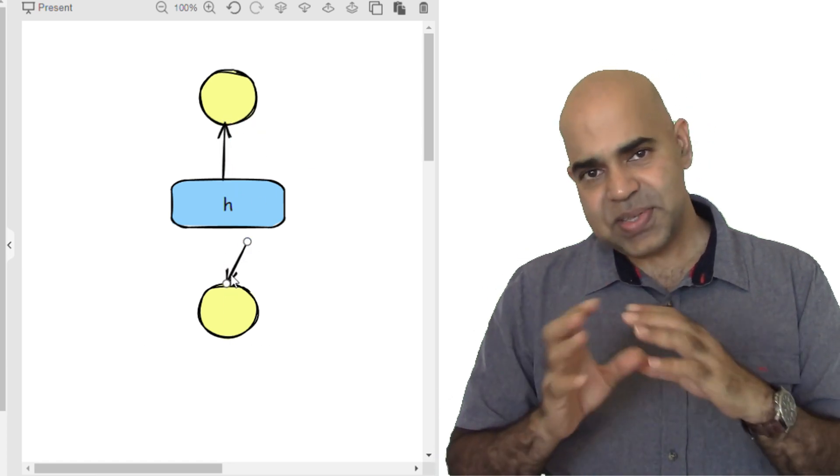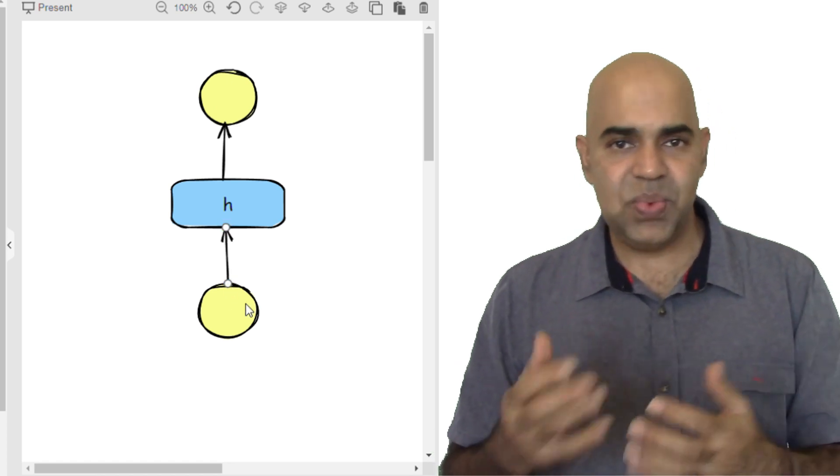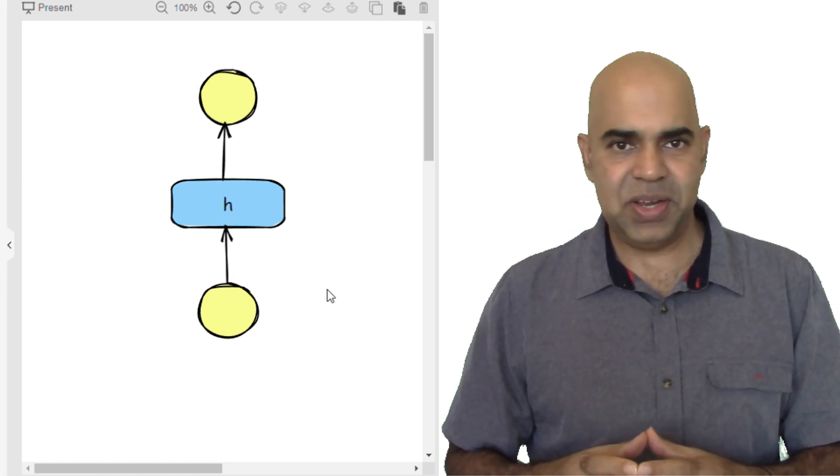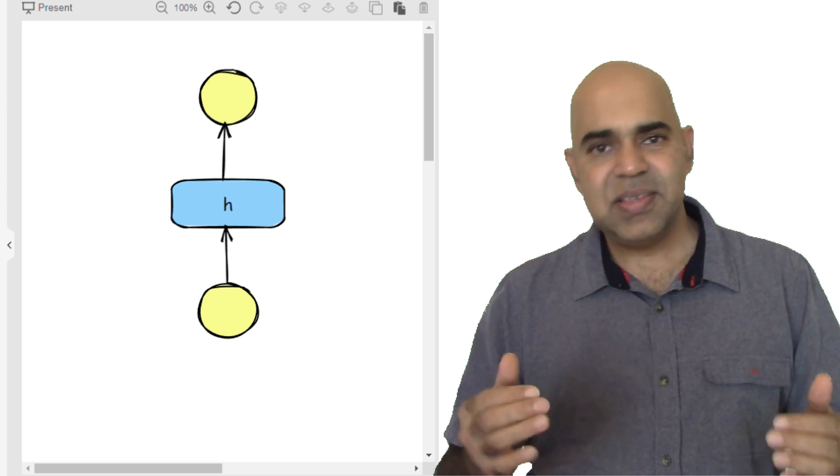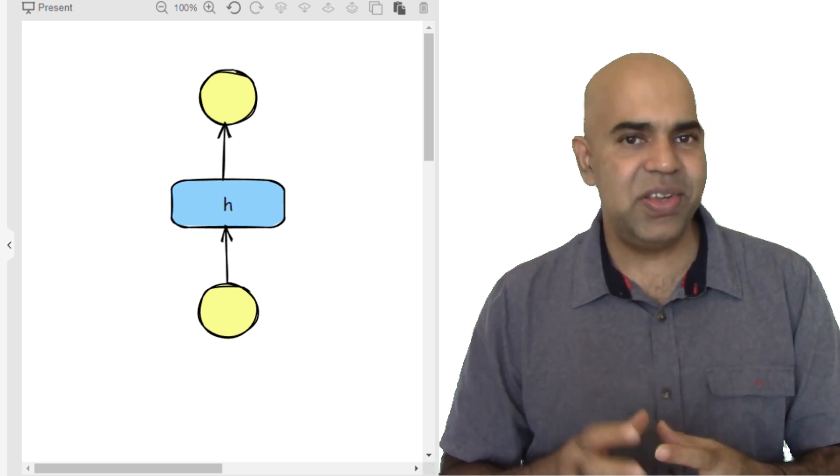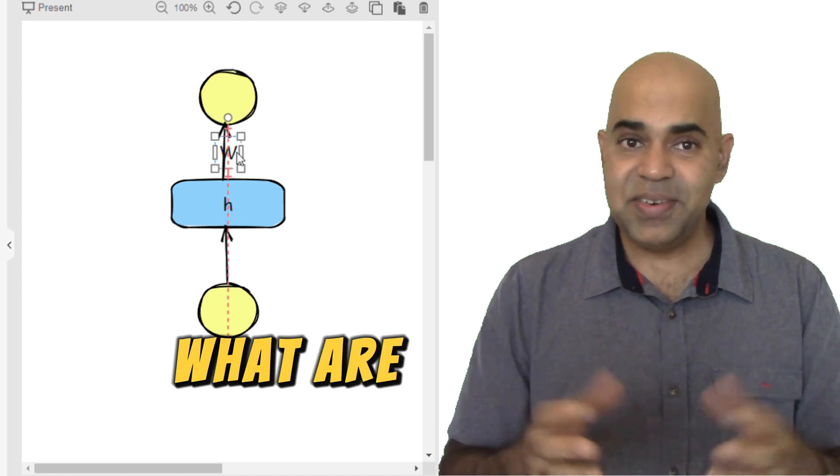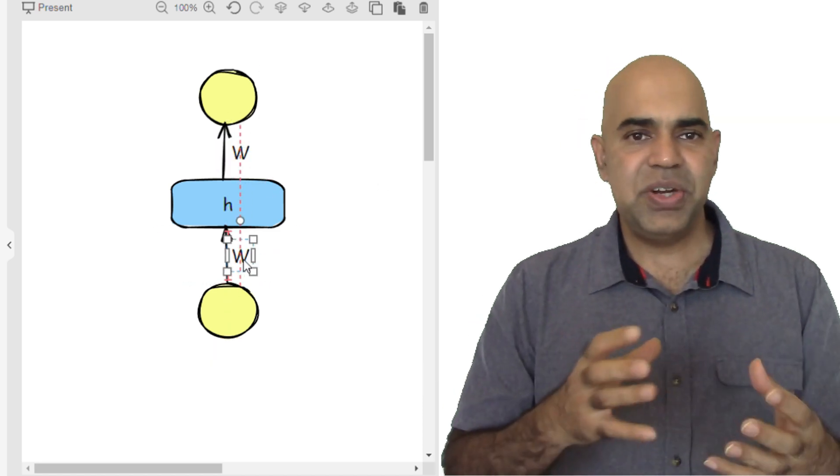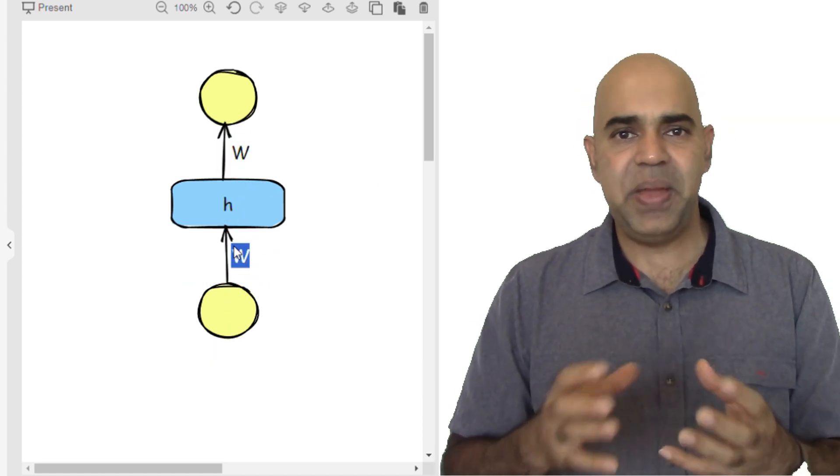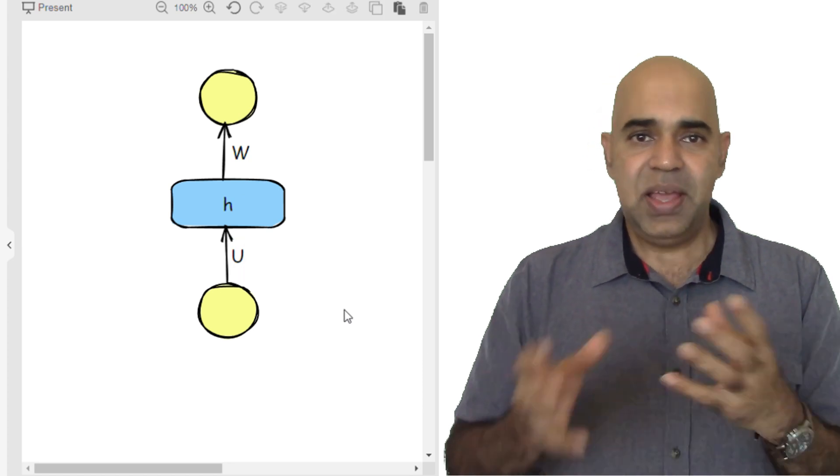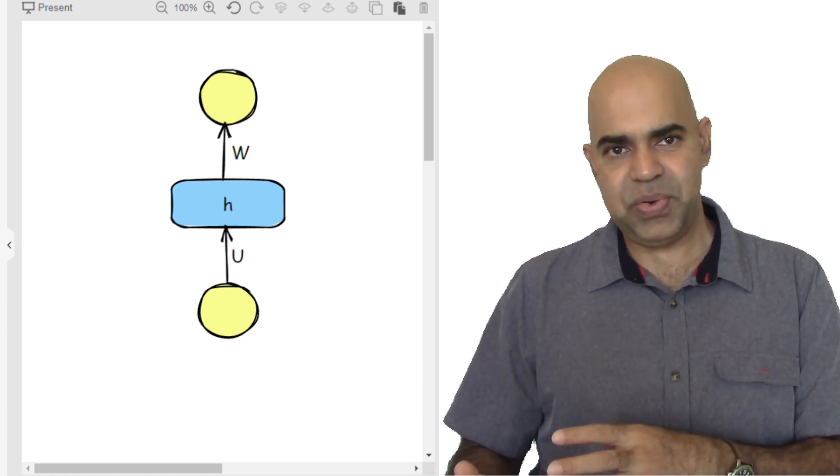The recurrent neural network learns by adjusting its weights through backpropagation. With long sequences, the gradients can become very small, almost zero in the RNN. What are gradients?